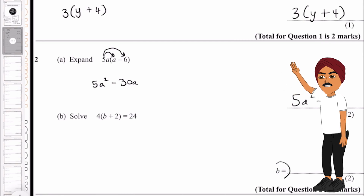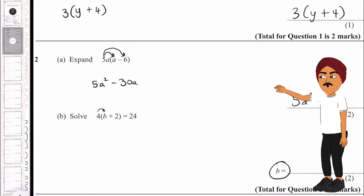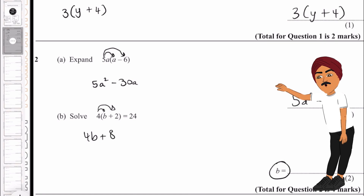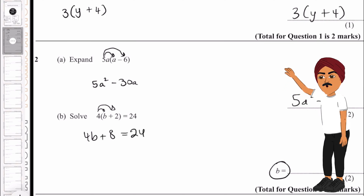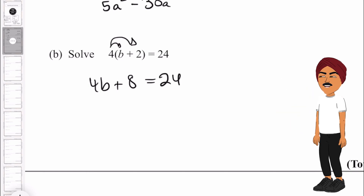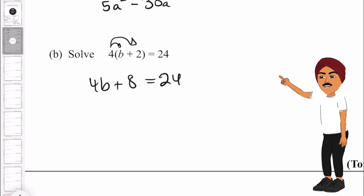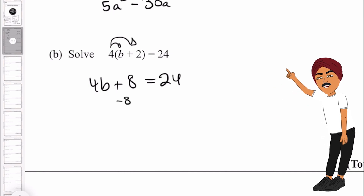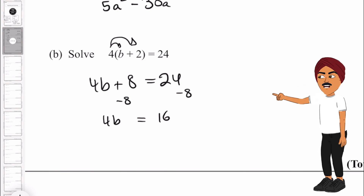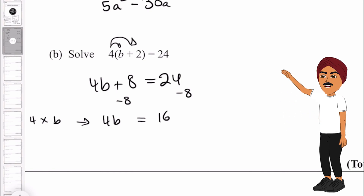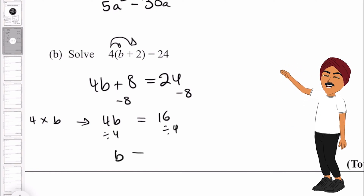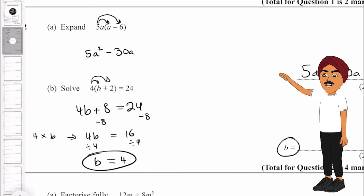For 2b we're solving to find the value of b. We expand each section and are left with 4b + 8 equals 24, because 4 times b is 4b and 4 times 2 is 8. Now we take away 8 from both sides, leaving 4b equals 16. Since 4b means 4 multiplied by b, we divide both sides by 4, leaving b equals 4.